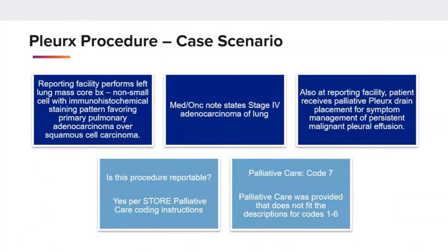Let's talk about a Plurax procedure. A Plurax drain catheter is a thin, flexible tube that's placed in the chest to drain fluid from the pleural space. It contains a one-way valve that prevents air from entering and fluid from leaking out when capped.